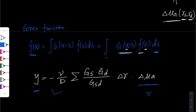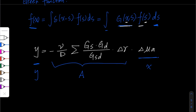After discretizing, this becomes y equals negative V over D, summed over discrete locations r, of G_s times G_d over G(r_s, r_d) times delta r times delta mu_A. We can express the whole coefficient term as our sensitivity matrix A. We know every term in A except the Green's functions, so the question becomes: how do we derive the Green's function?